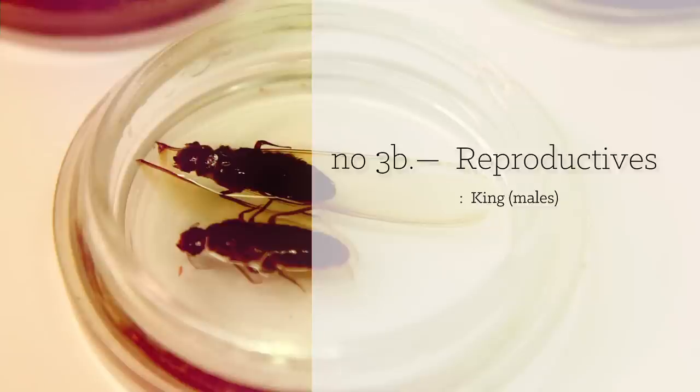Of course, you have males. They're winged. And when they're ready to mate, they'll take off into a swarm — a mating flight — and mate with a female. When she's mated, she'll drop to the ground and start her own colony.